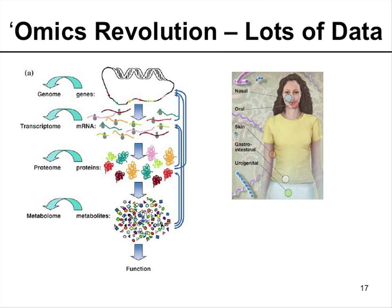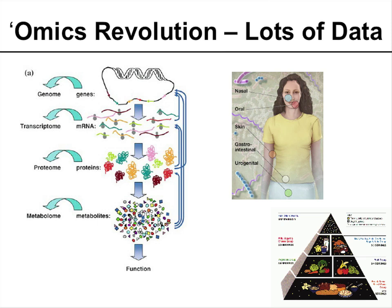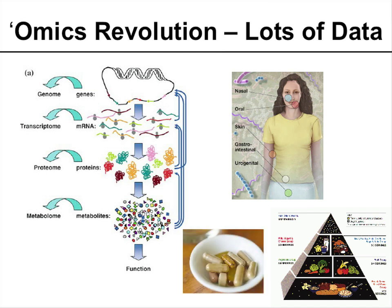And then it gets worse than that. All over the body, we have different organisms, so the function may vary in different parts of the body. And then people start eating things. This is people eating properly, according to the USDA pyramid. But I hear there are a couple of people out there who are just not eating too well in the United States — and in some other countries as well.